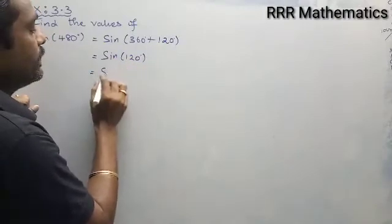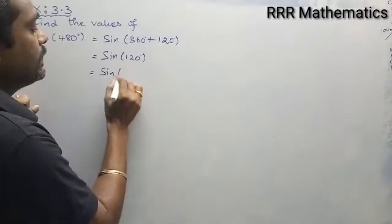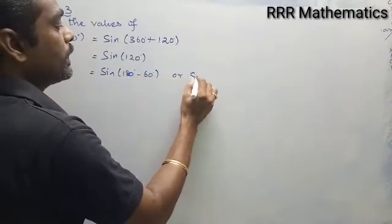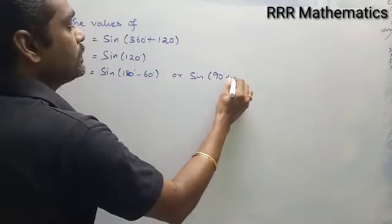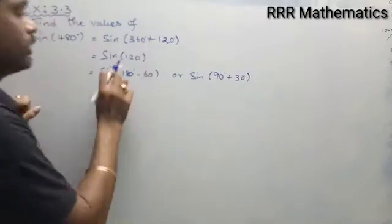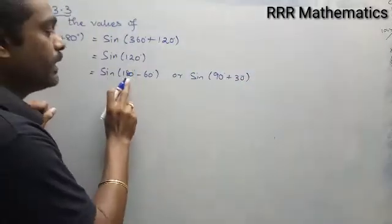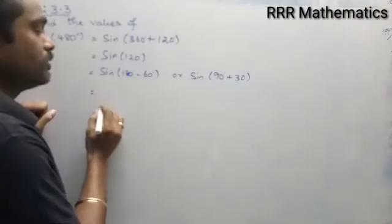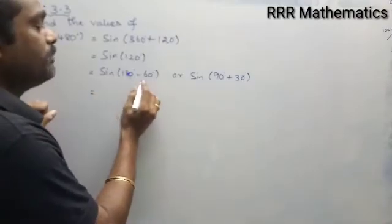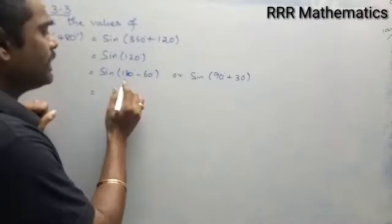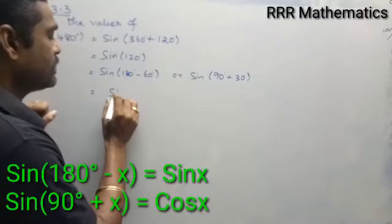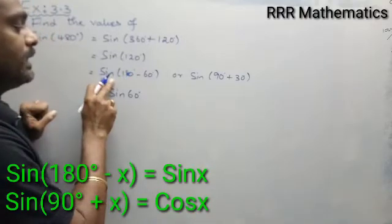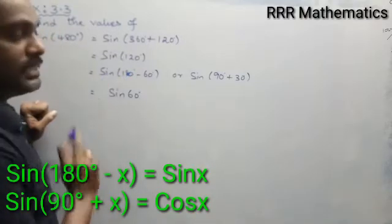I can write sine 120 degree as sin(180 minus 60) or as sin(90 plus 30). You can write this 120 degree either way — you will get the same solution. For sin(180 minus 60), there is no change in the function. It lies in the second quadrant, and in the second quadrant sin theta is positive, so the output is sin 60.